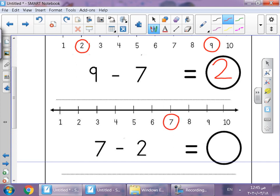We jump backwards 2 steps. Let's go. 1, 2. We get 5. Excellent. So, 7 minus 2 equals 5. The answer is 5.